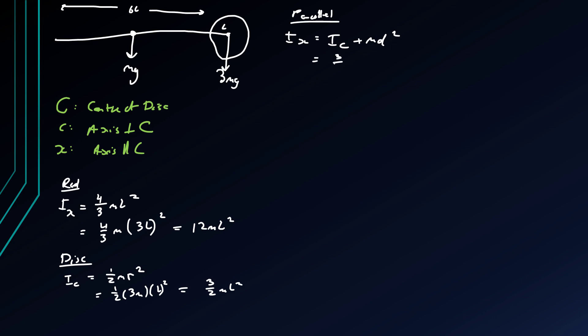And so this becomes three halves ml squared plus the mass of it is 3m and the distance from one point, one end of the rod to the center of the disk is going to be our d which is 7l squared. Is 49 times 3 plus 3 halves, which means that Ix is 297 over 2 ml squared.